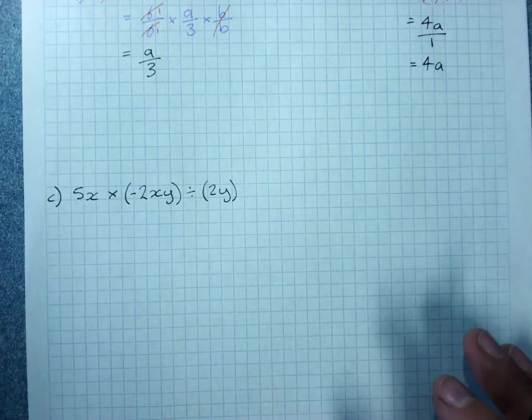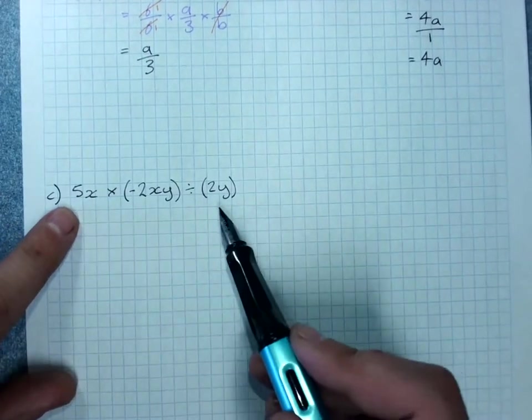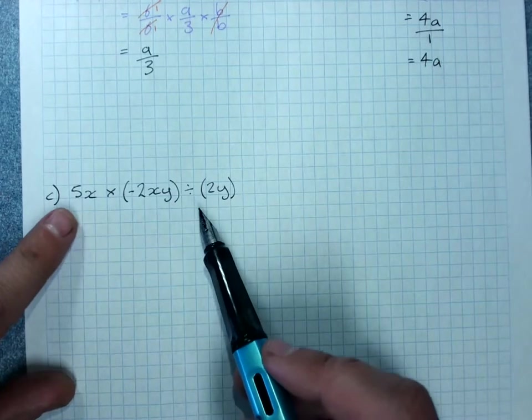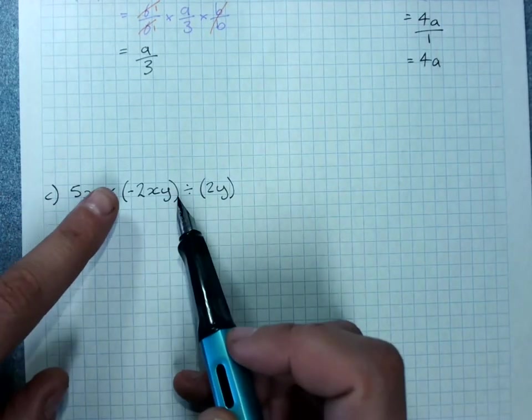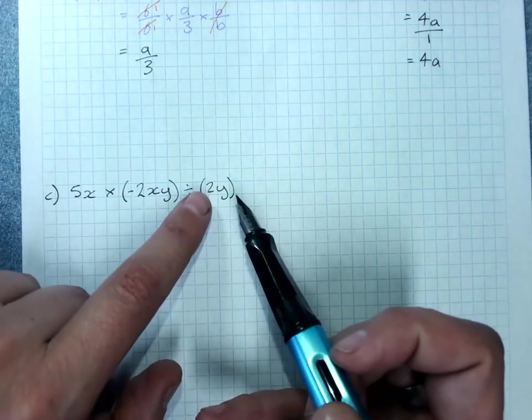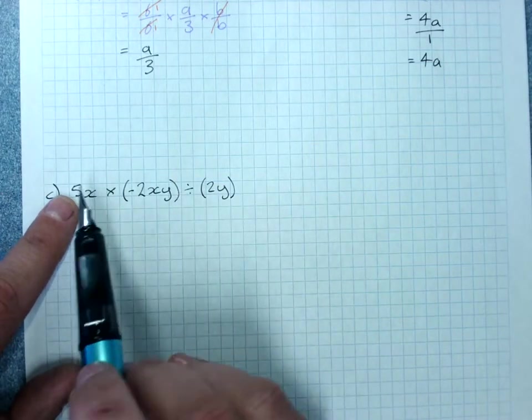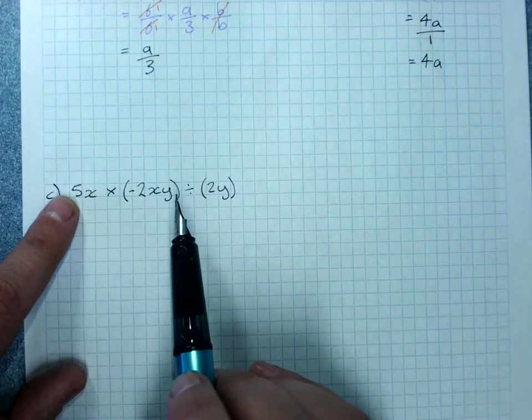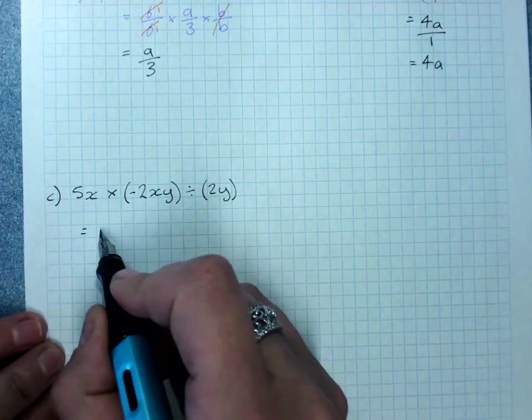Here, they've been quite clear about what's happening and I've got order of operations to consider. 5x times negative 2xy divided by 2y. Order of operations says this happens first because left to right multiplying and dividing. 5 times negative 2, negative 10,